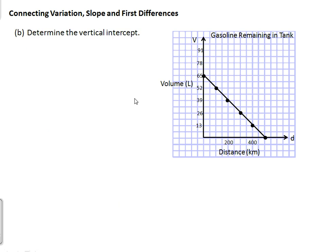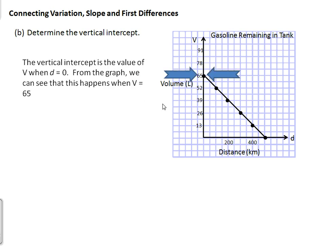Part b asks us to find the vertical intercept. When we have a graph, we can determine the vertical intercept very easily because it's the point where the line touches the vertical axis, or the dependent axis. The vertical intercept is the value of V — our dependent variable — when D equals 0, at the point where it meets the axis. From the graph we can see that this happens when V equals 65, so b equals 65.